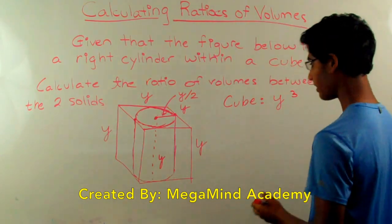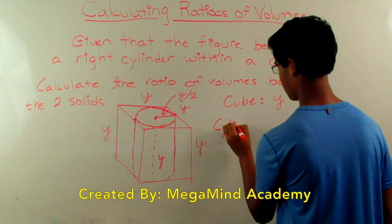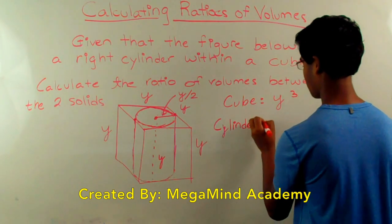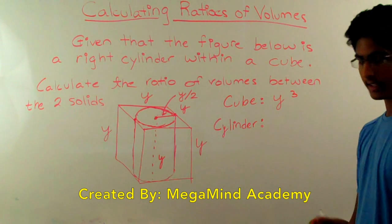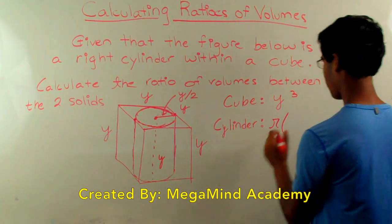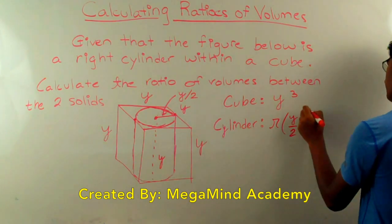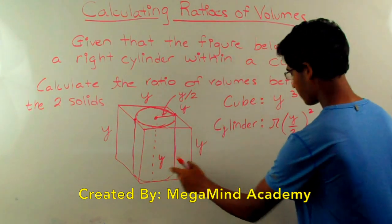The area of the cylinder is pi r squared h. So we have pi times r, which is y over 2, squared times h, which we know is y.